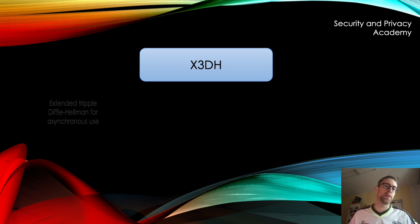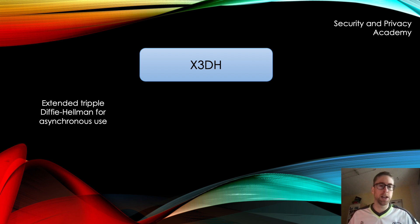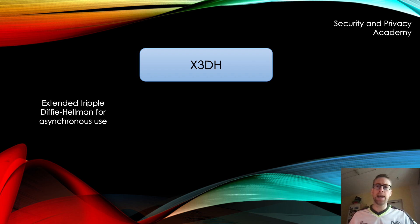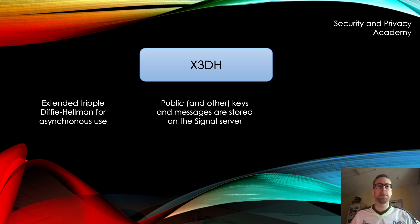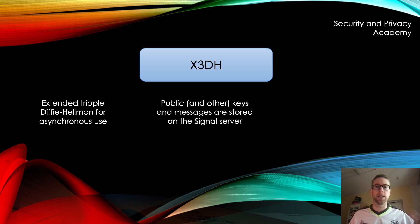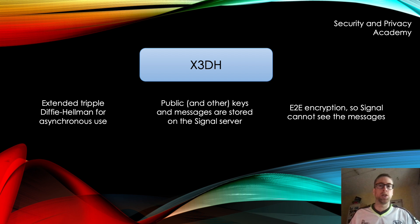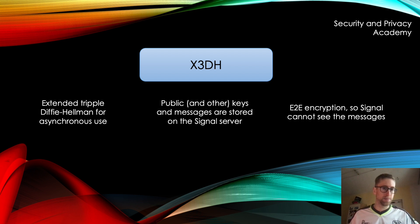X3DH is a version of Diffie-Hellman that can be used for asynchronous key exchange. Remember that Diffie-Hellman alone only works synchronously, so both parties have to be online at the same time. X3DH works by storing the public Diffie-Hellman key and other keys needed later in the process on the Signal server — or whoever operates the system. Everything is end-to-end encrypted, including messages that are sent but not yet received. This is how Signal works asynchronously, and the E2E encryption ensures that Signal, or whoever operates the server, cannot see the content of the messages.